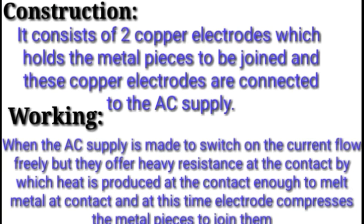Construction: it consists of two copper electrodes which hold the metal pieces to be joined, and these copper electrodes are connected to the AC supply. When the AC supply is switched on, the current flows freely but offers heavy resistance at the contact, by which heat is produced — enough to melt metal at the contact — and the electrode then compresses the metal pieces to join them.